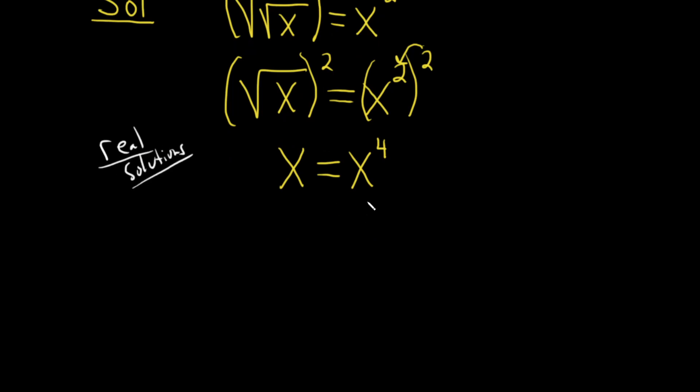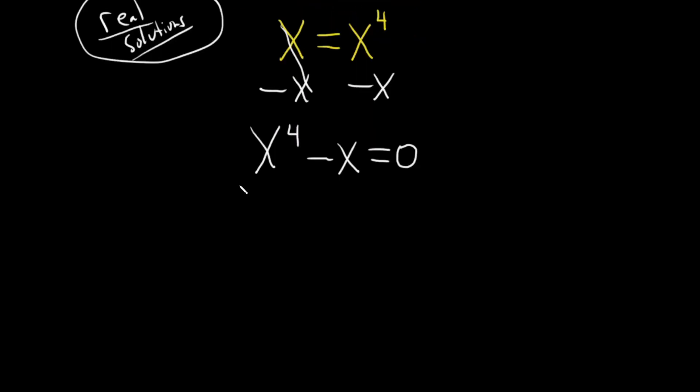Okay so now to solve this what we can do is we can set it equal to 0. So let's subtract x from both sides like this. And let's put this side on the left. So we have x to the 4th minus x and that's equal to 0. And I'll talk about why we're only looking for real solutions in a second.